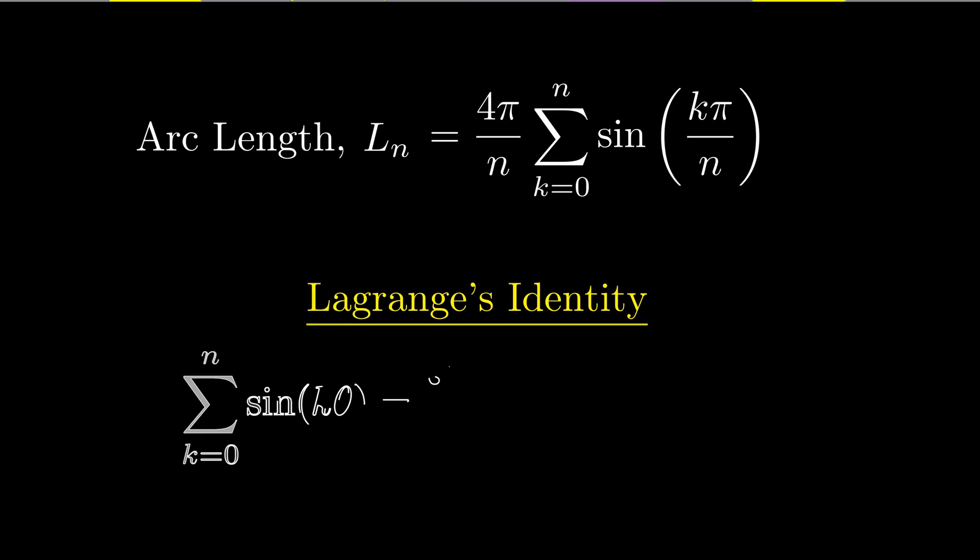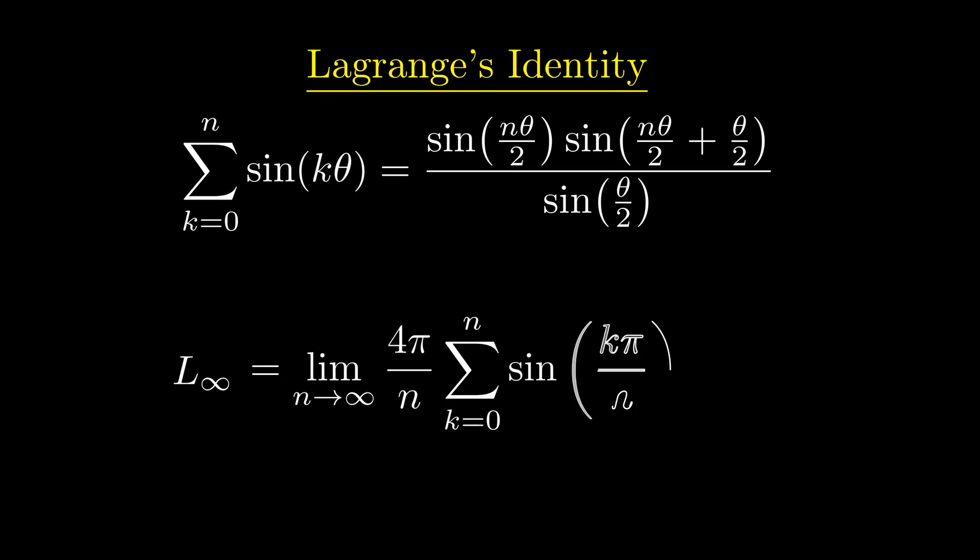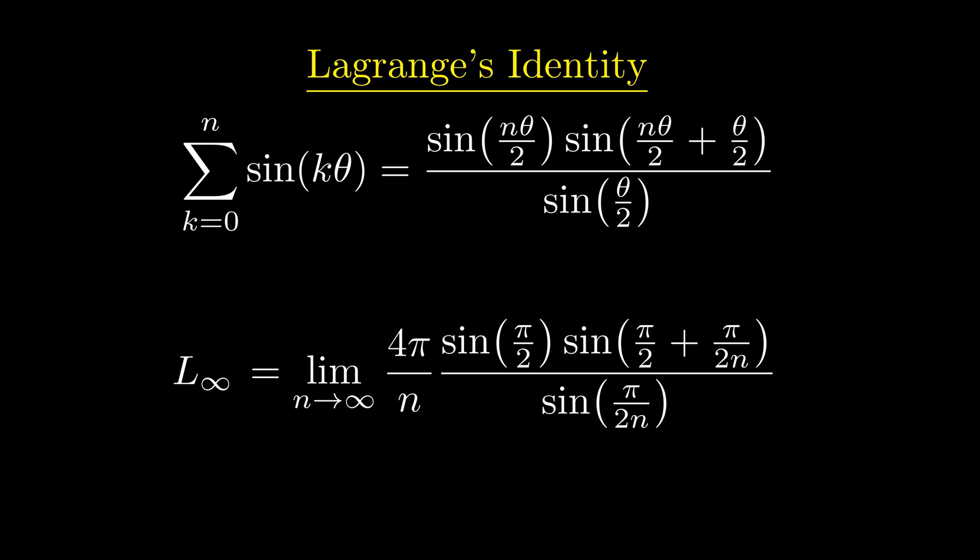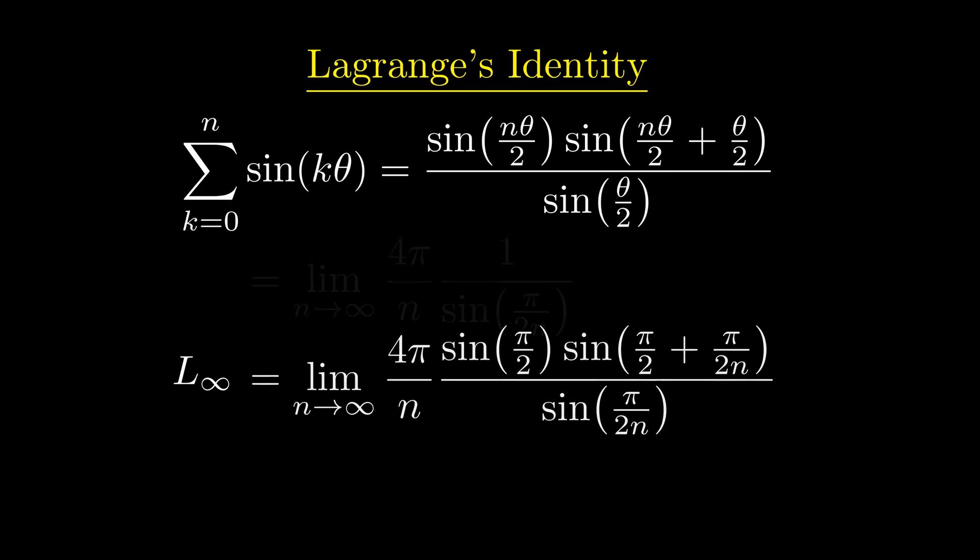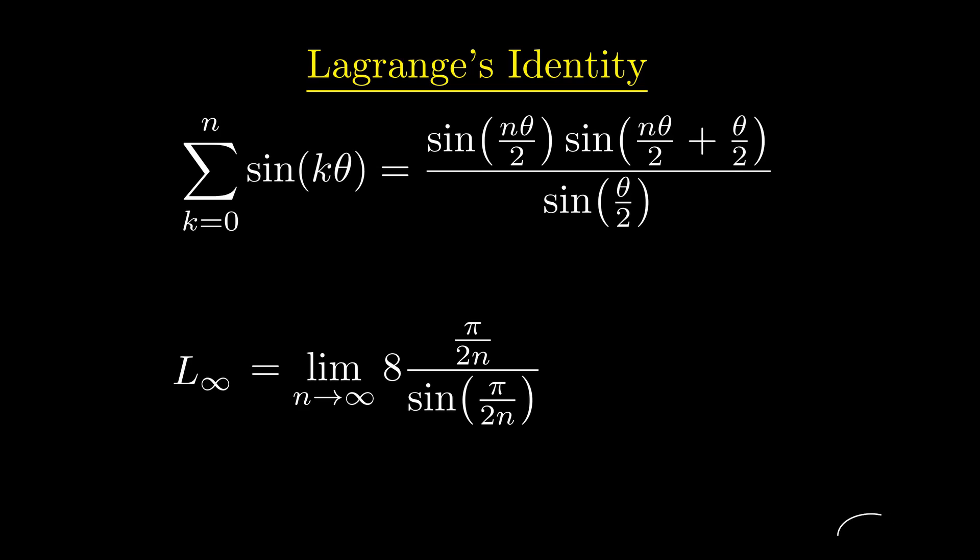We make use of Lagrange's trigonometric identity which gives a closed form expression for a sum of sines of angles in arithmetic progression. From there, we have a simple form for the sum that we are trying to evaluate. Finding the limit of this expression is simple. Both the sin terms in the numerator becomes 1 as n tends to infinity. Manipulating the resulting expression and using the famous small angle approximation for the sin function, we finally see that the value of L∞ here is 8.